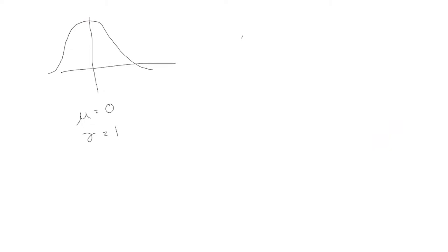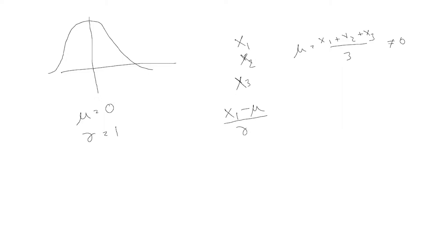Let's understand what standard deviation means with a discrete example. You have multiple values x1, x2, x3, and their mean mu equals (x1 + x2 + x3) / 3. This mean is probably not zero. You need to change these values so they are centered around mean zero. The transformation used is the Gaussian transform: instead of using x1, you use (x1 - mu) / sigma, where sigma is the square root of the summation of (xi - mu) squared.